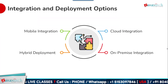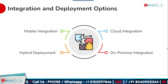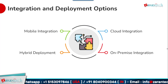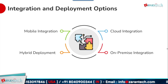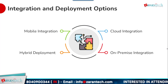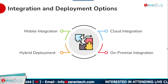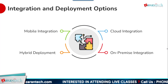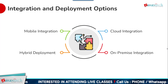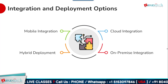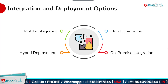SAP S/4HANA Public Cloud supports a range of integration and deployment patterns. For on-premise integration, it can securely connect with systems in a company's own data center, enabling a hybrid approach. It can also integrate with other cloud solutions for seamless data exchange across multiple cloud platforms. The solution itself can be deployed in a hybrid model, and with its web-based architecture and open APIs, it supports mobile integration scenarios to empower workers on the go.